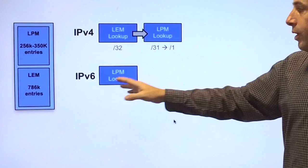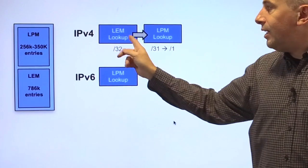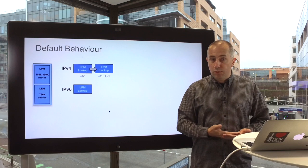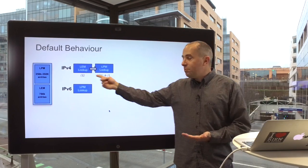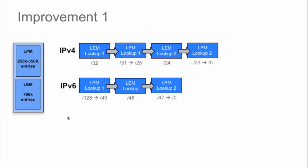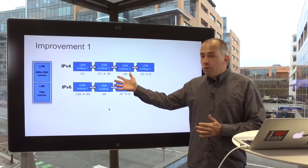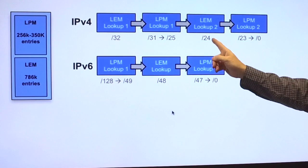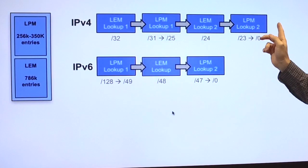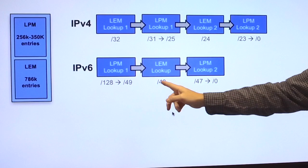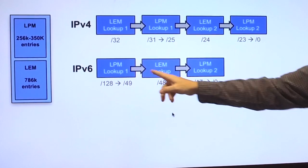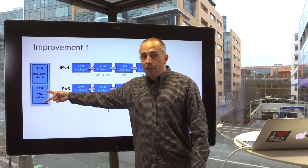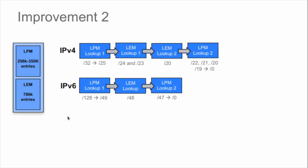Knowing that most new prefixes will come as slash 24 and slash 23, they are stored in LEM. How does it work exactly? By default, all the prefixes go into the LPM aside from slash 32. That's not very useful for internet distribution where we have a lot of slash 24 and slash 23 and not that many slash 32. So that's why we've done the first improvement, which is the default mode: we use slash 32 and slash 24 in LEM, and the rest goes in LPM. For IPv6, all the slash 48 go in LEM and the rest goes in LPM. That way we are leveraging the largest database, which is the LEM.